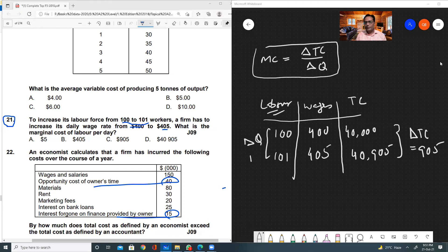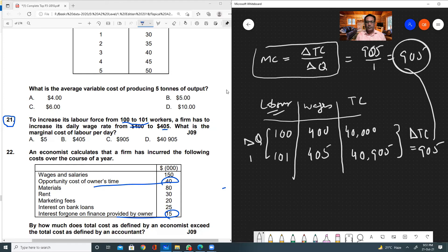Now put these values into the formula. So $905 divided by 1 is equal to $905. So $905 is the correct answer, that is option C.